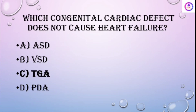Which congenital cardiac defect does not cause heart failure? TGA. The full form of TGA is Transposition of the Great Arteries — the pulmonary artery and the aorta are the great arteries, and when their positions are interchanged, that is called TGA. Other defects include ASD (Atrial Septal Defect), VSD (Ventricular Septal Defect), and PDA (Patent Ductus Arteriosus).